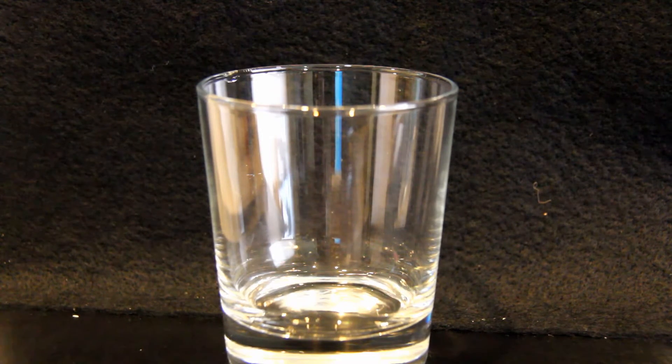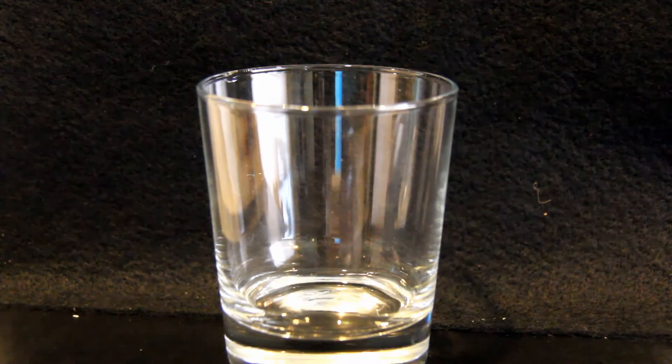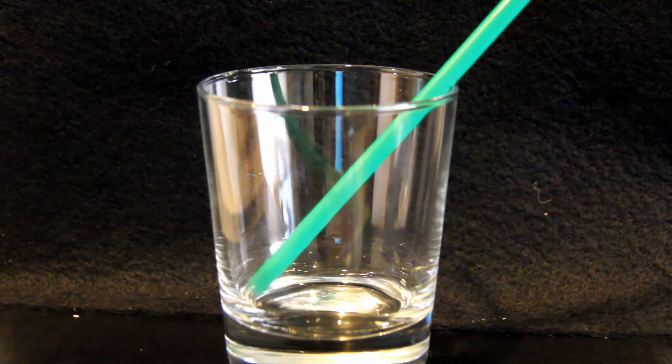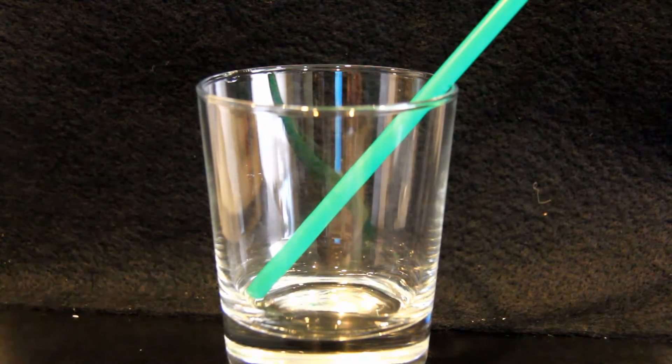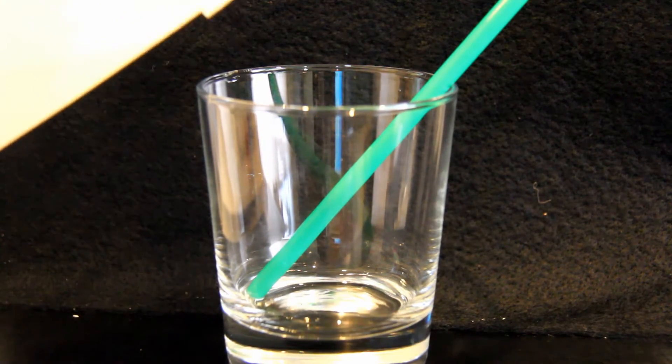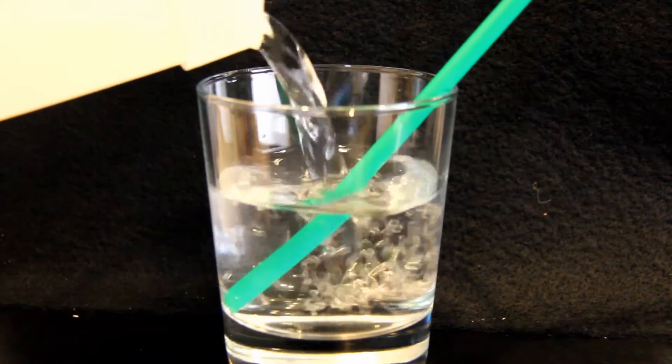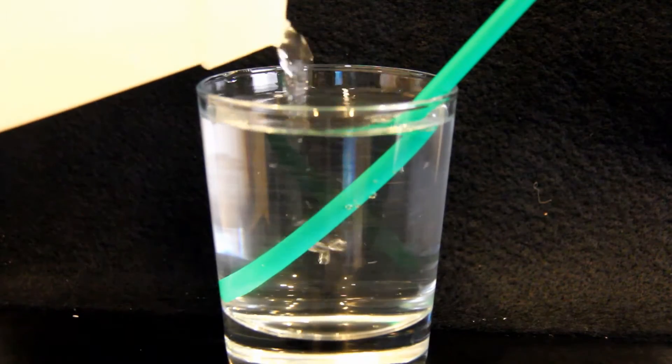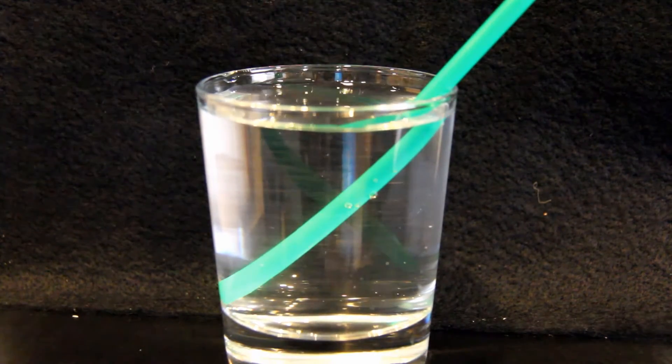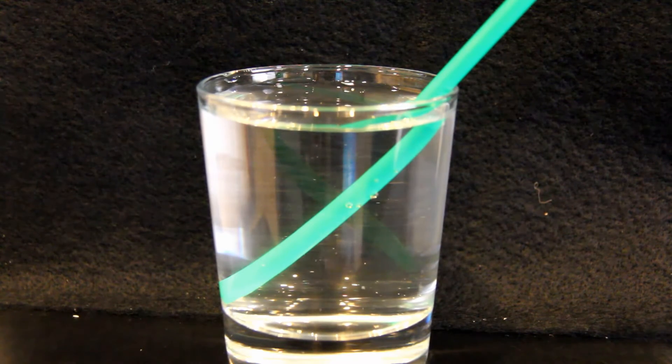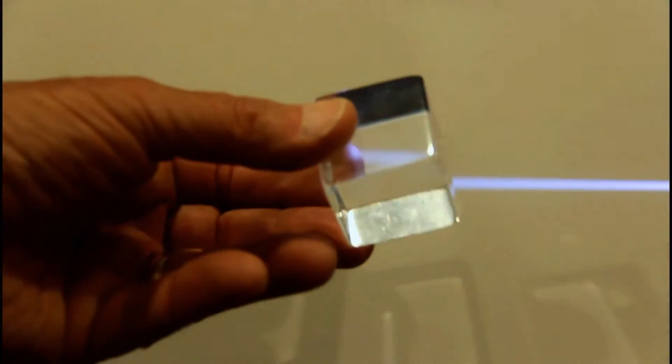Refraction is what makes a drinking straw appear to bend in a glass of water. I'll put a straw in this glass and fill the glass with water. The straw isn't really bent. It just appears to be bent.